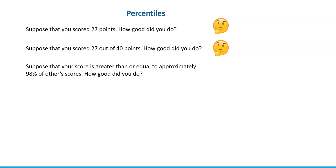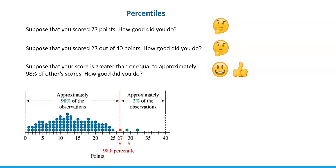We don't have enough information to make a judgment. But what if I tell you that your score is greater than or equal to approximately 98% of other scores — in other words, 98% of students got scores below yours? With that information, we can see it's actually a very good result. If your score is greater than or equal to approximately 98% of other scores, you're in the top 2%.